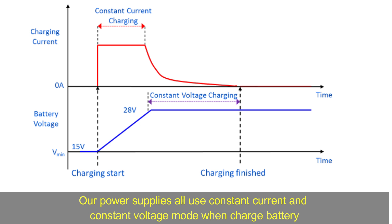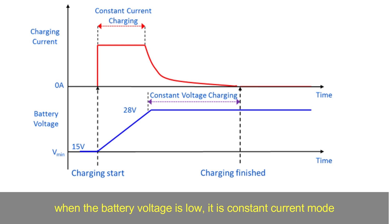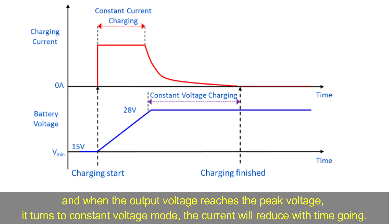Our power supplies all use constant current and constant voltage mode when charging a battery. When the battery voltage is low, it is constant current mode, and when the output voltage reaches the peak voltage, it turns to constant voltage mode, and the current will reduce over time.